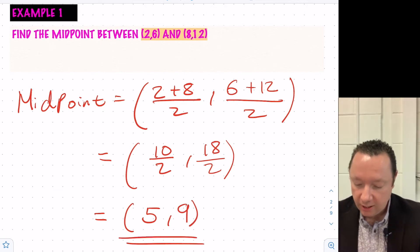And just a quick check, is 5 between the middle of 2 and 8? That's 3 away, so it's in the middle. And between 6 and 12 is 9. Well, it's 3 away from 6 and 3 away from 12, so I'm done. I've definitely got my midpoint.